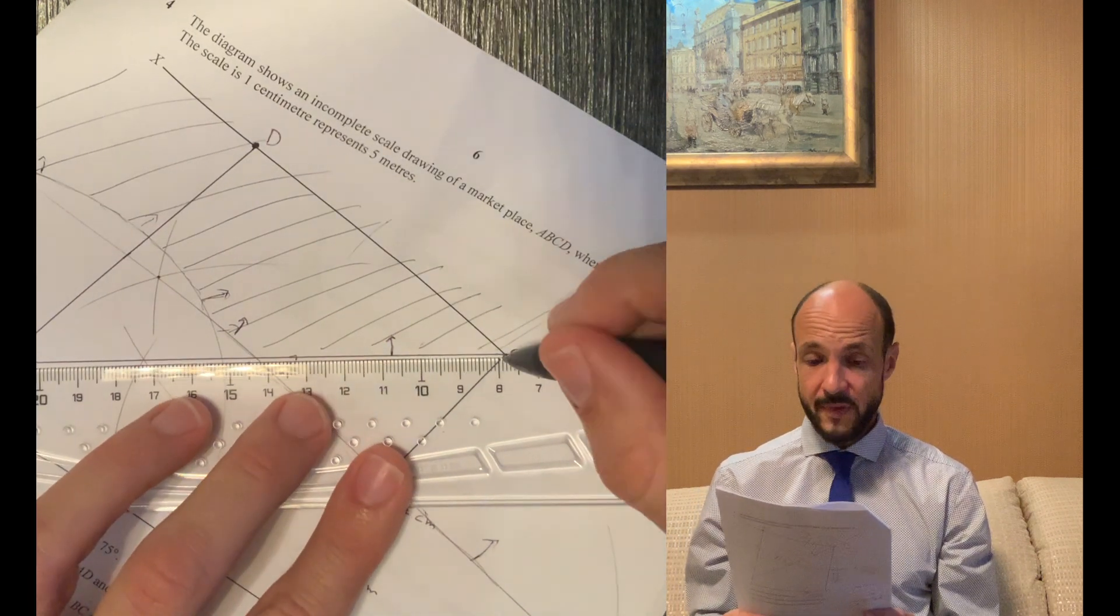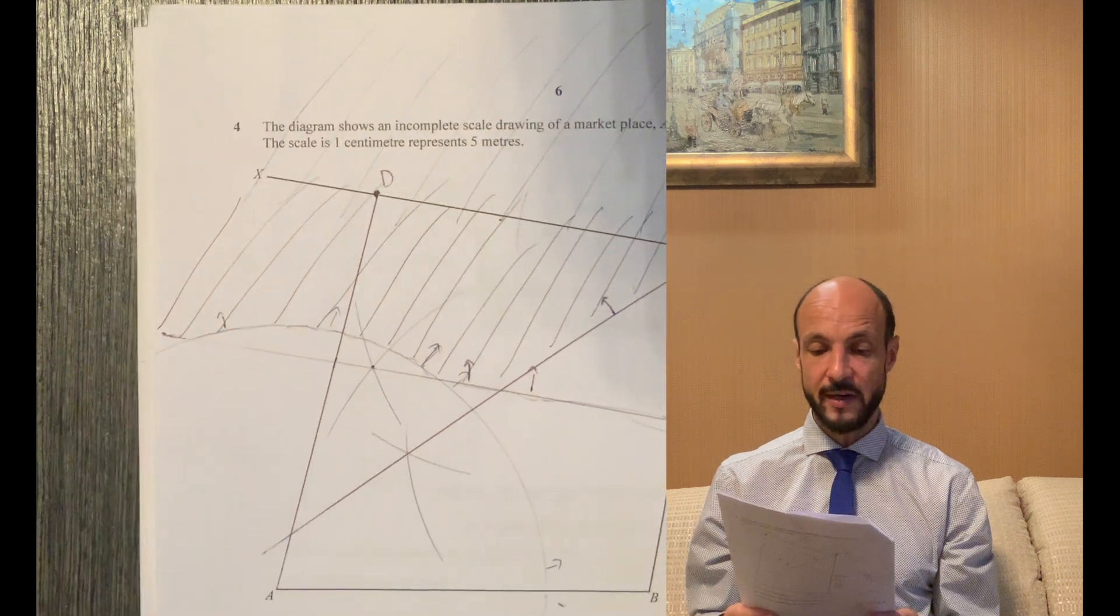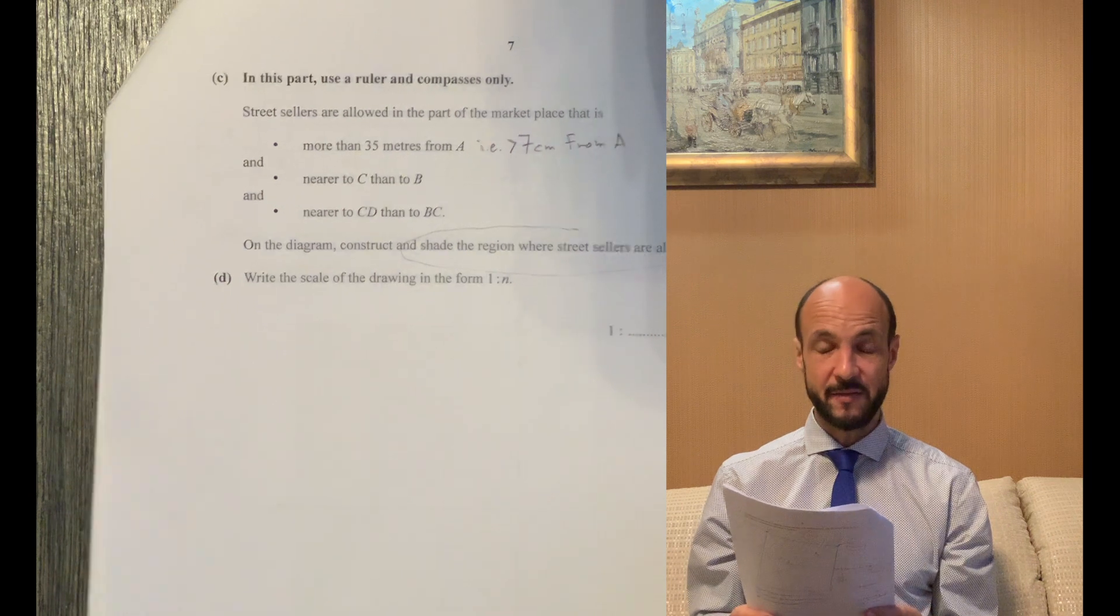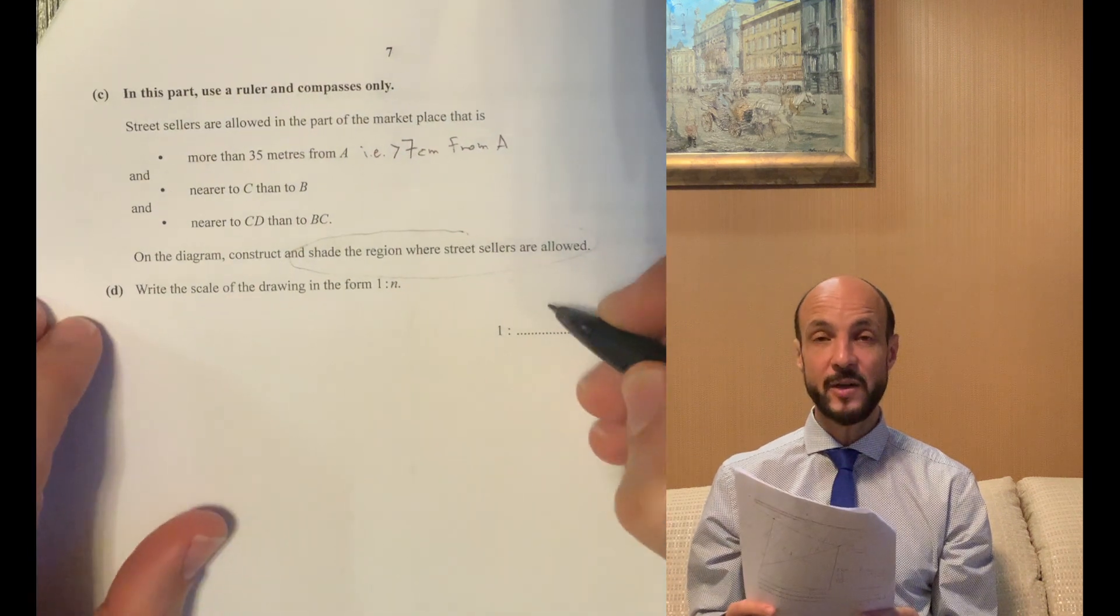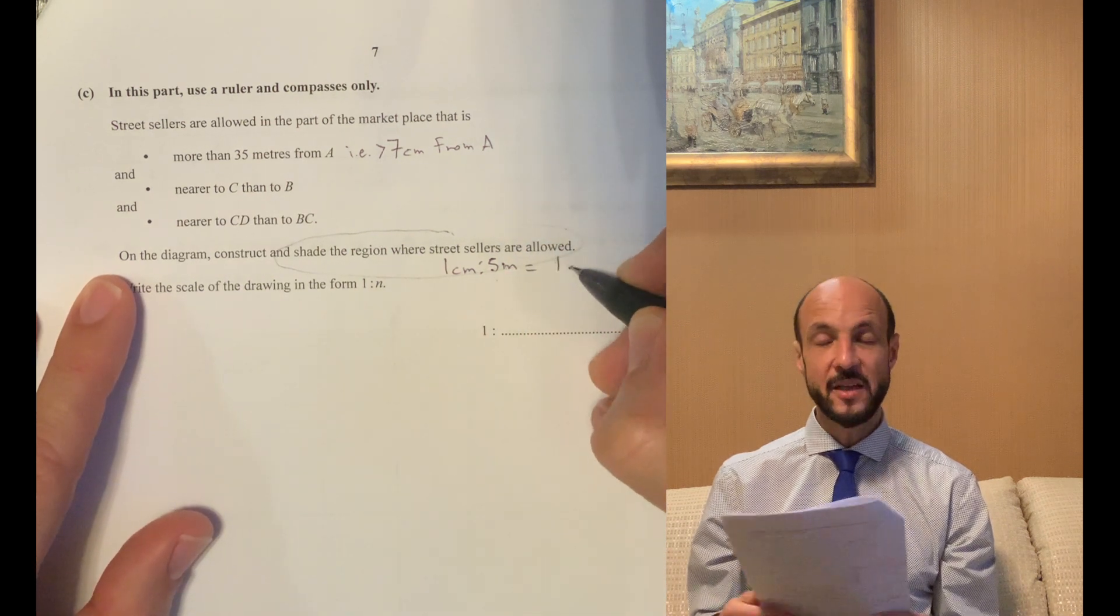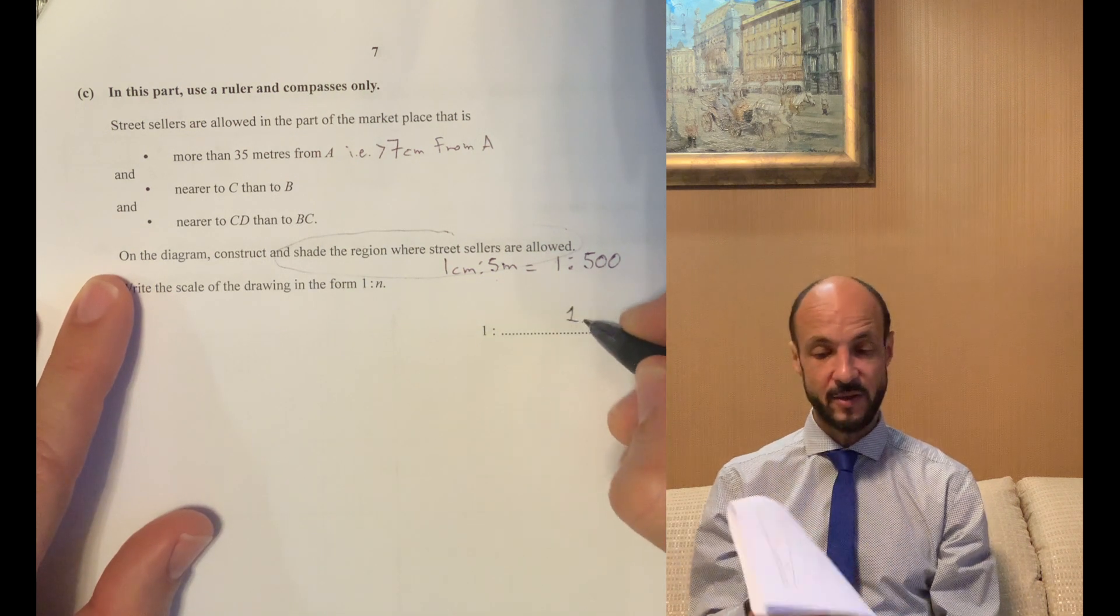Then in part D it says write the scale of the drawing in the form 1 to n. Well this is 1 centimeter to 5 meters, we need the units to be the same so that's going to be 1 centimeter to 500 centimeters, so it's 1 to 500. We basically strip out the units once the units are the same.